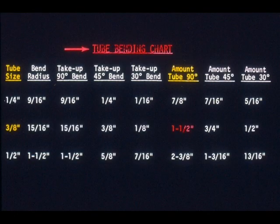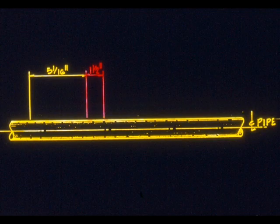Your next step will be to determine where the bend will end. To find that figure, you simply look under the column Amount of Tube for Ninety Degrees. The chart shows that a ninety-degree bend in a three-eighths inch tube will require one and one-half inches. This means the entire bend will take one and one-half inches from start to finish. So you simply measure one and a half inches from the last mark and make your second mark. The second mark shows where the bend ends.